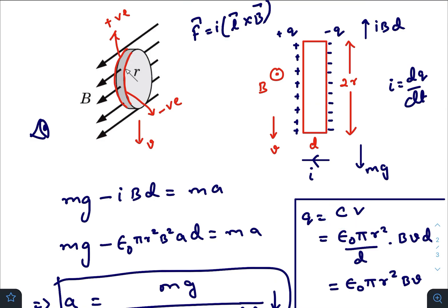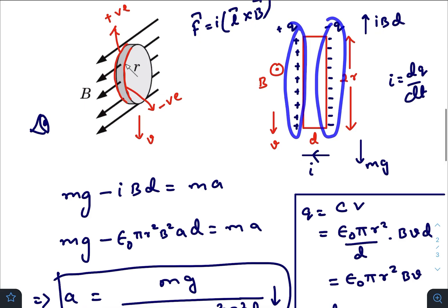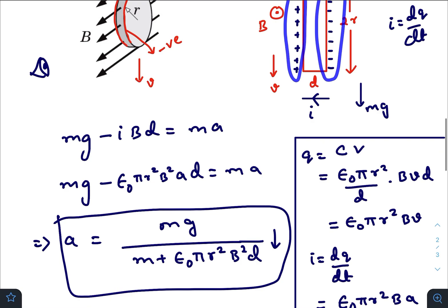C is the capacitance, because this assembly acts as a capacitor with this surface as the positive plate and this surface as the negative plate. And formula for a capacitor is epsilon naught cross sectional area divided by distance between two plates, that would be epsilon naught pi r square by D.